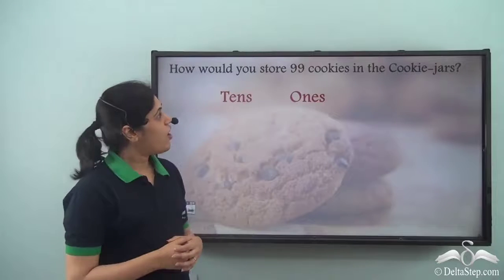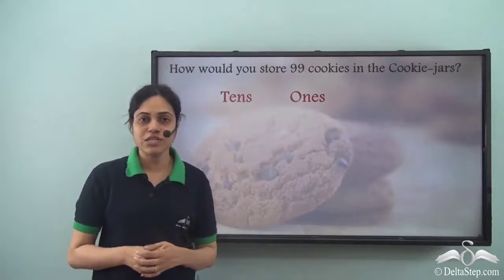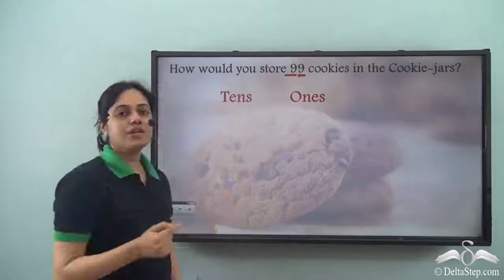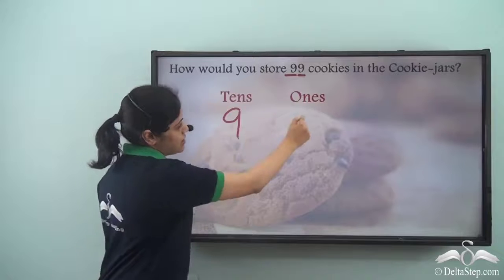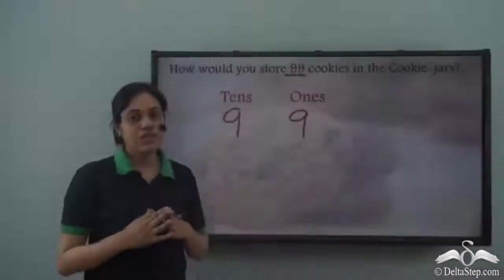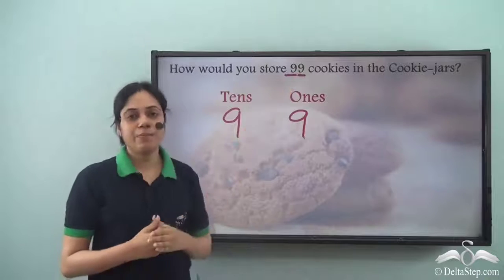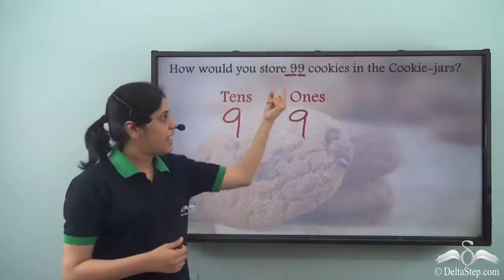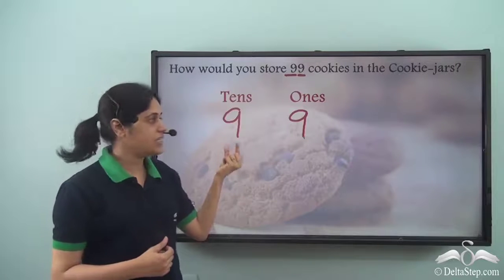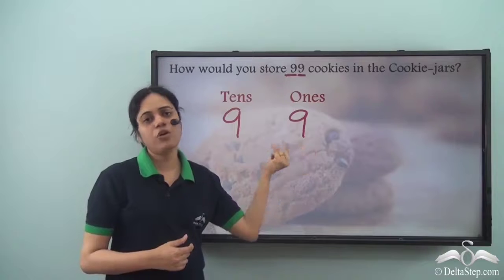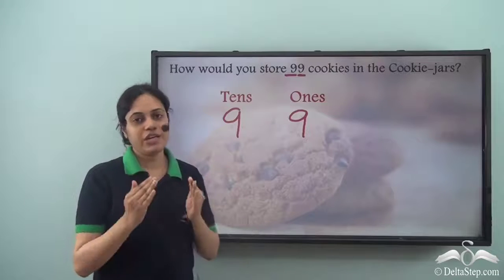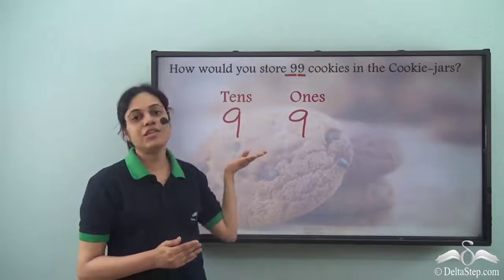Now can you answer this question? How would you store ninety-nine cookies in the cookie jars? The first nine is for the tens place and the second nine is for the ones place. So it is nine tens and nine ones — this is how I can store ninety-nine cookies. This is how you represent numbers: the first digit stands for tens and the second digit stands for ones. So this nine is actually nine tens or ninety, whereas this nine is nine ones or only nine. Our numbers are grouped into tens so that we can represent them using the same digits.